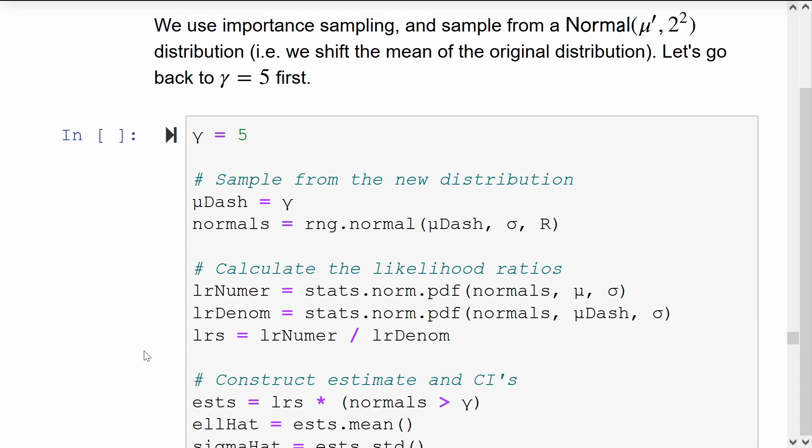Then we calculate the same vector of indicator variables, which tell us whether or not our sample normal exceeded the threshold. We scale each of these by its associated likelihood ratio. We can create a single importance sampling estimate with an associated confidence interval.